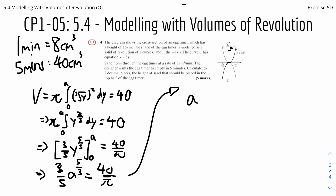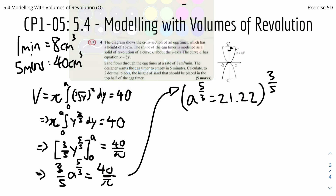So A to the power of 5 over 3 equals 40 over pi divided by 3 over 5, which gives 21.22. Raising both sides to the power of 3 over 5 to remove the fractional exponent, we get A equals 6.25. The units are in cm, so A equals 6.25 cm.